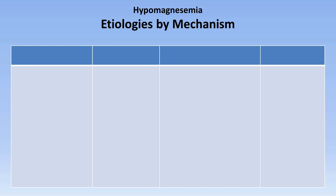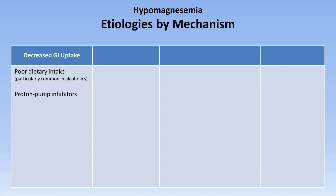There are a large number of causes of hypomagnesemia. The first general mechanism is decreased GI uptake. This obviously can be due to just poor dietary intake, most commonly seen in alcoholics. It is also observed in patients on PPIs through a not completely understood mechanism. There is also a very rare disorder called primary familial hypomagnesemia, the specific genetics of which are not yet fully worked out, but which presents in infancy as hypocalcemia that's responsive to IV magnesium therapy.